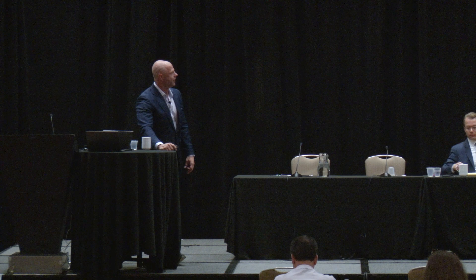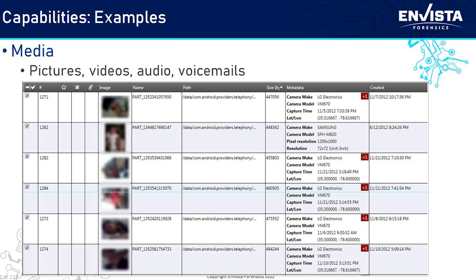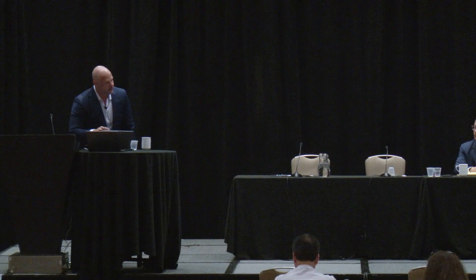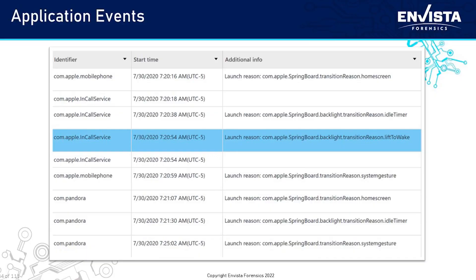Multimedia can be recovered and transmitted to the car. When we look at the interplay between phone and car, we can actually see interactions with the phone. We can see when you plug the phone in via USB or connect via Bluetooth. Reading down the list of artifacts: what you're doing at the moment, transition, reason, home screen — you clicked on the home screen. The screen went out because you haven't touched it. Lift to wake — pick your phone up and the screen turns on. We can see when you lift your phone to wake it. System gesture — that's swiping your finger on the phone. We can see when you unlock your phone, when you change orientation from vertical to horizontal.